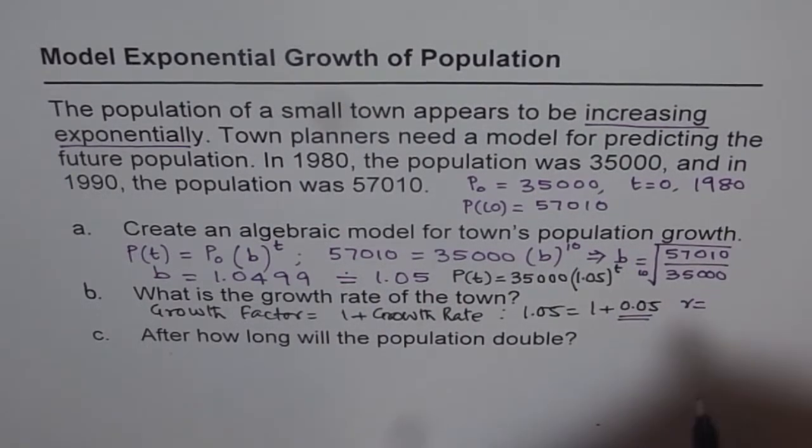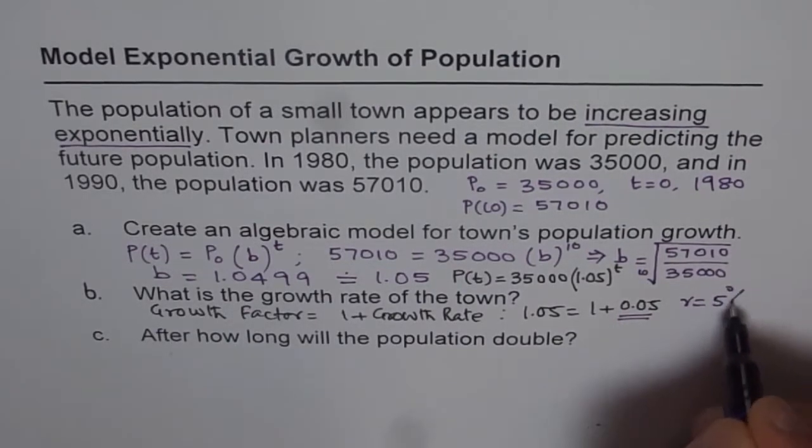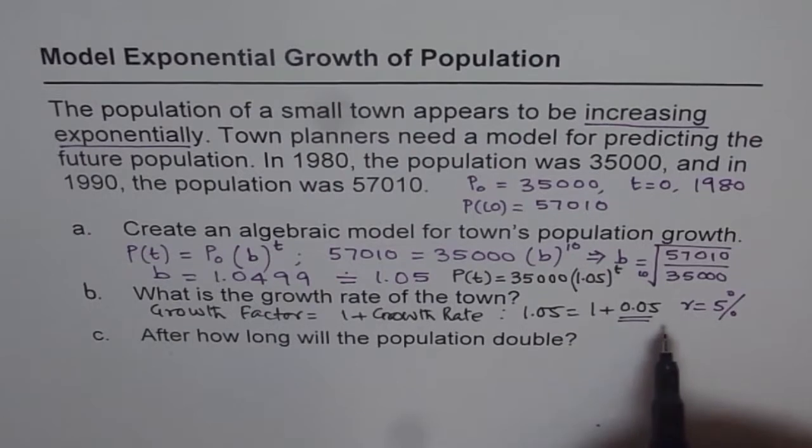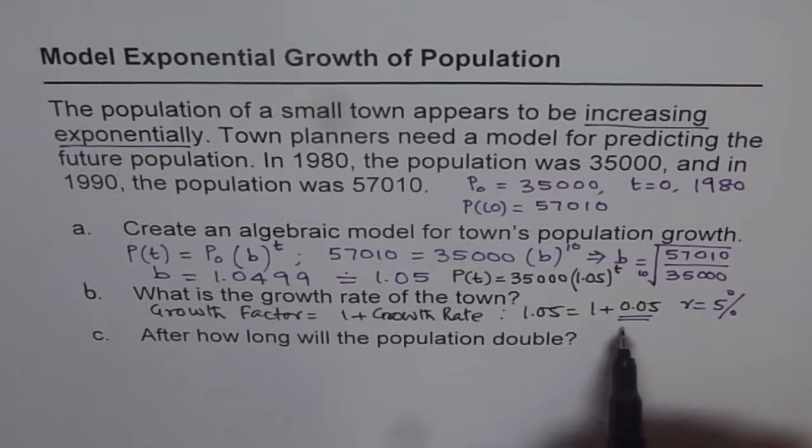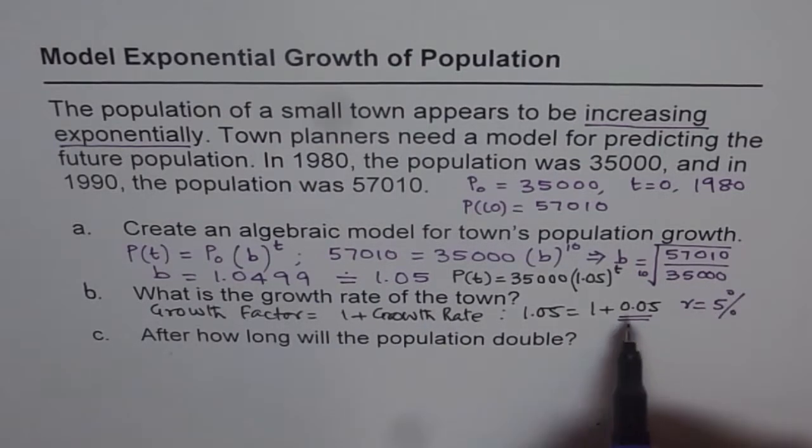In our case we have 1.05. So 1.05 is equal to 1 plus 0.05. So this factor here is the growth rate. So R, the growth rate is 0.05 which in percent could be written as 5%. So we say the growth rate is 5% which is 0.05.